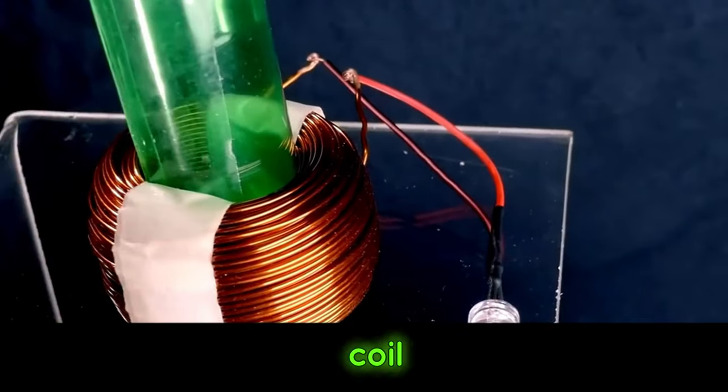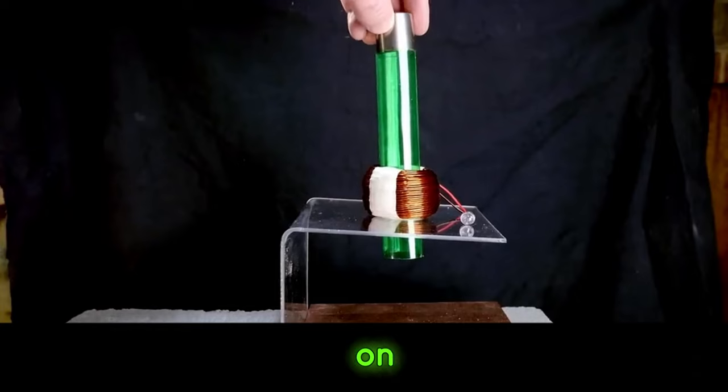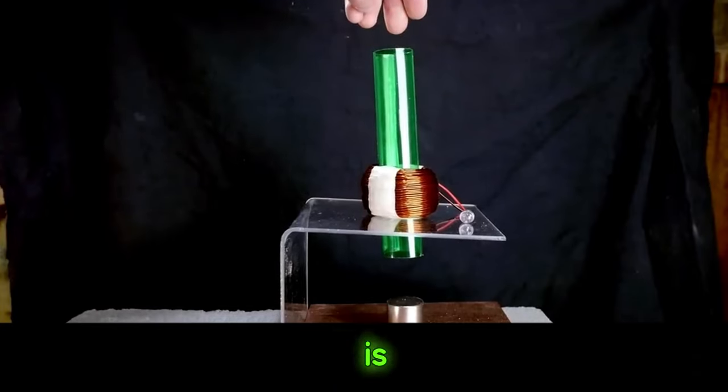Connect an LED bulb to the coil. When falling fast, the light bulb will come on. This proves that there is current flowing through.